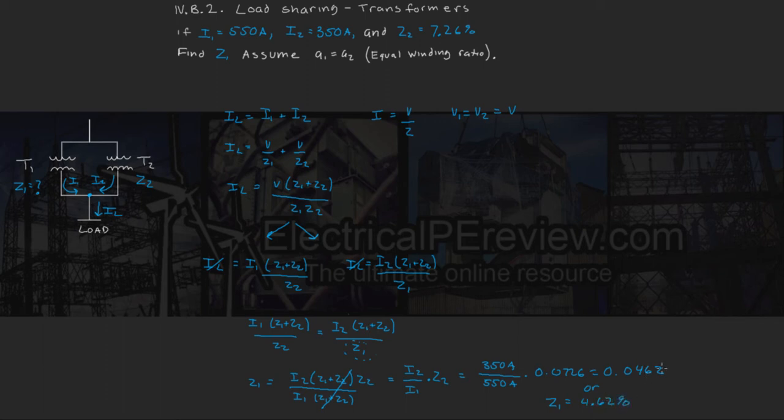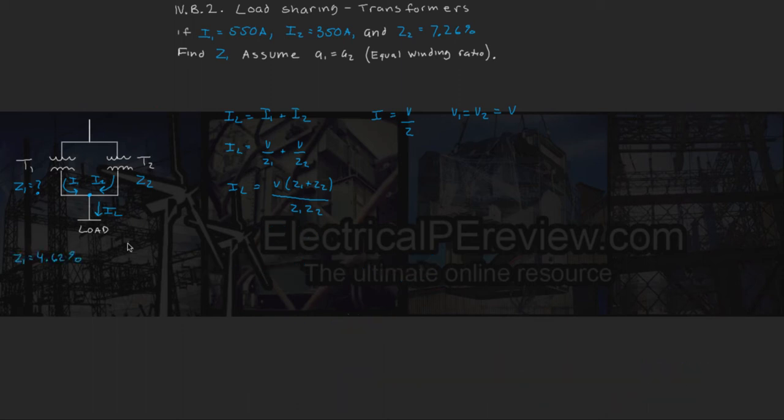And of course, we come up with our percent value by multiplying our decimal by 100. Okay, so we've found Z1, now let's try it a different way.